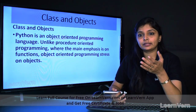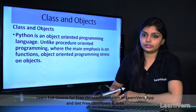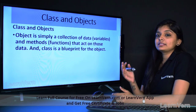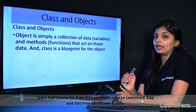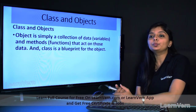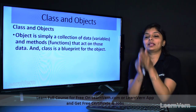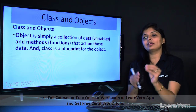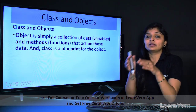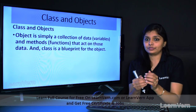Python provides you the facility that you can create your class and you can create objects and work with them. An object is simply a collection of data variables and methods — functions that act on that data. A class is a blueprint for the object. Basically, we create a class in which we define variables, initialize values, and define functions. So class is a collection of data variables and member functions.